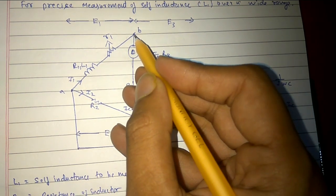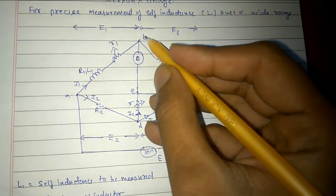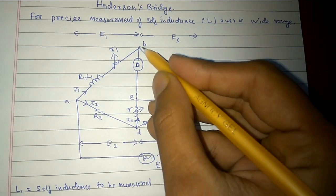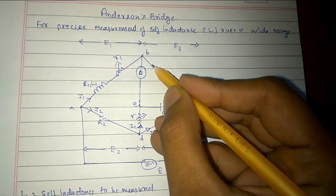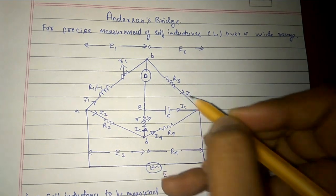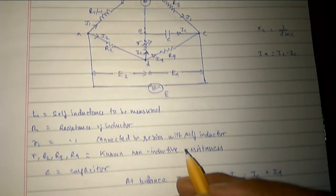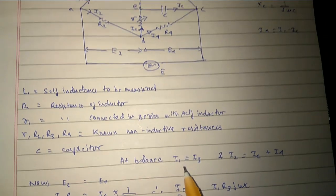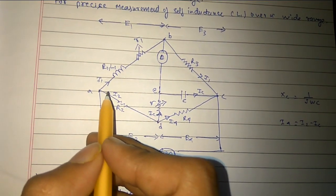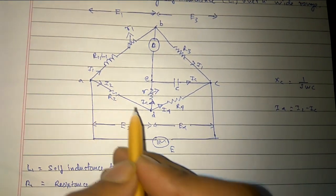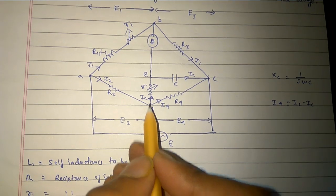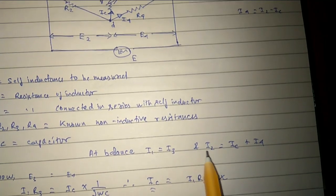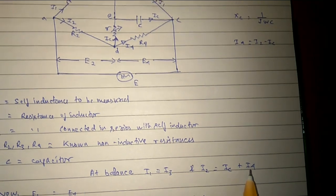I1 goes here. Now since it is in the balanced condition, no current flows from this path, so the same I1 current flows through R3 resistance. So I1 equals I3. Now I2 current goes from here and distributes into two paths: Ic and I4. So I2 equals Ic plus I4.